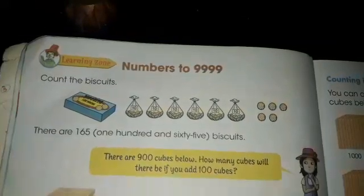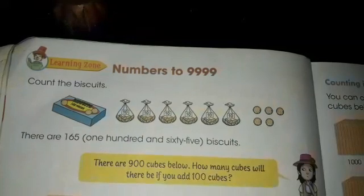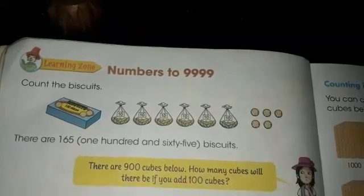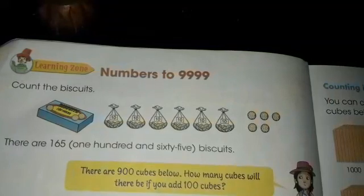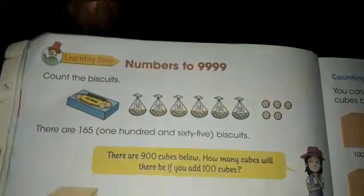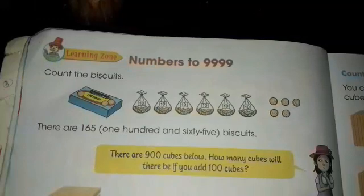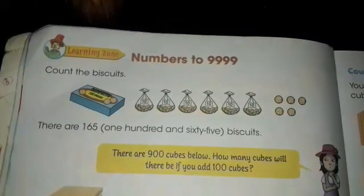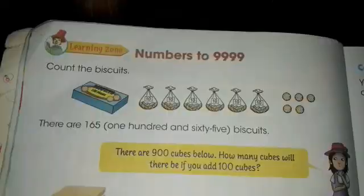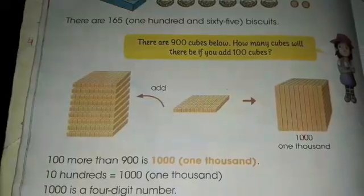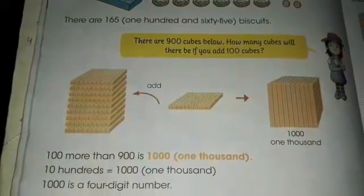There is a box of ten pieces of biscuits, and one, two, three, four, five, six sets of tens — one hundred, six tens, and five ones. There are one hundred and sixty-five biscuits here.